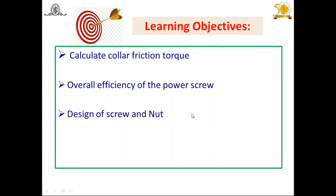The third objective of today's session is the design of screw and nut, which is based on rational design — meaning which types of stresses are going to be induced in it — and based on that we are going to find out the dimensions of the screw and the nut.